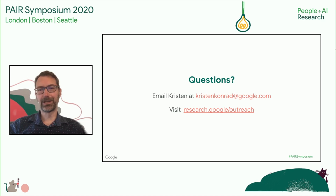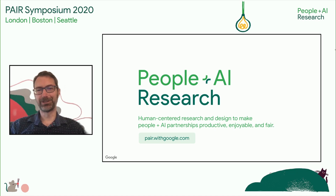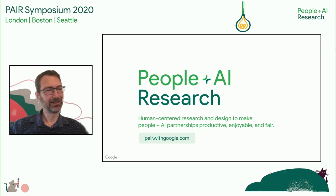I want to talk a little bit about the People + AI Research team and what we do. We look at human-centered research and design, and we're trying to make people + AI partnerships productive, enjoyable, and fair.